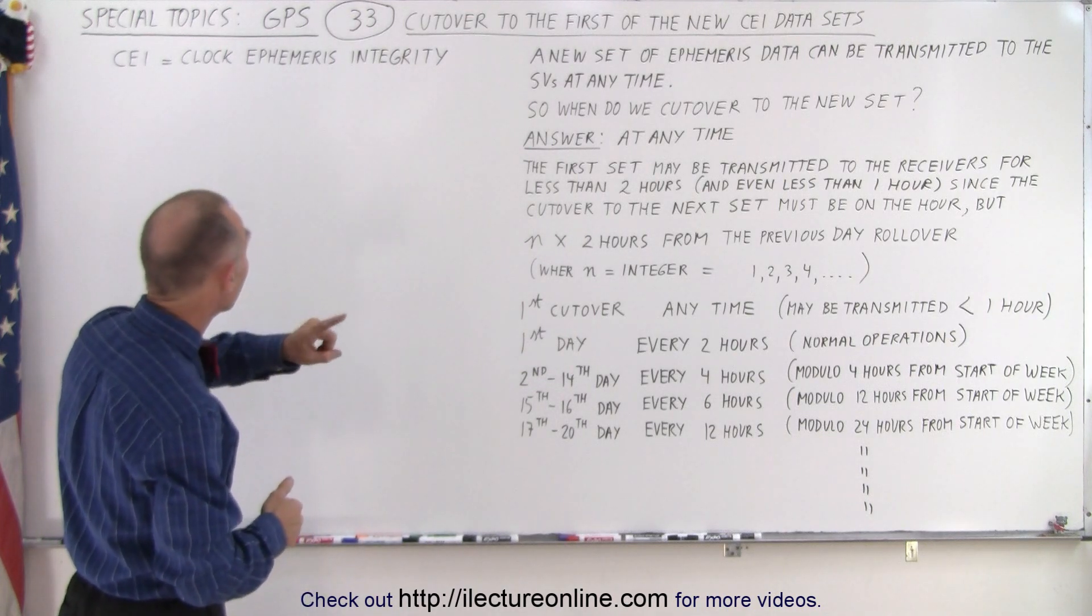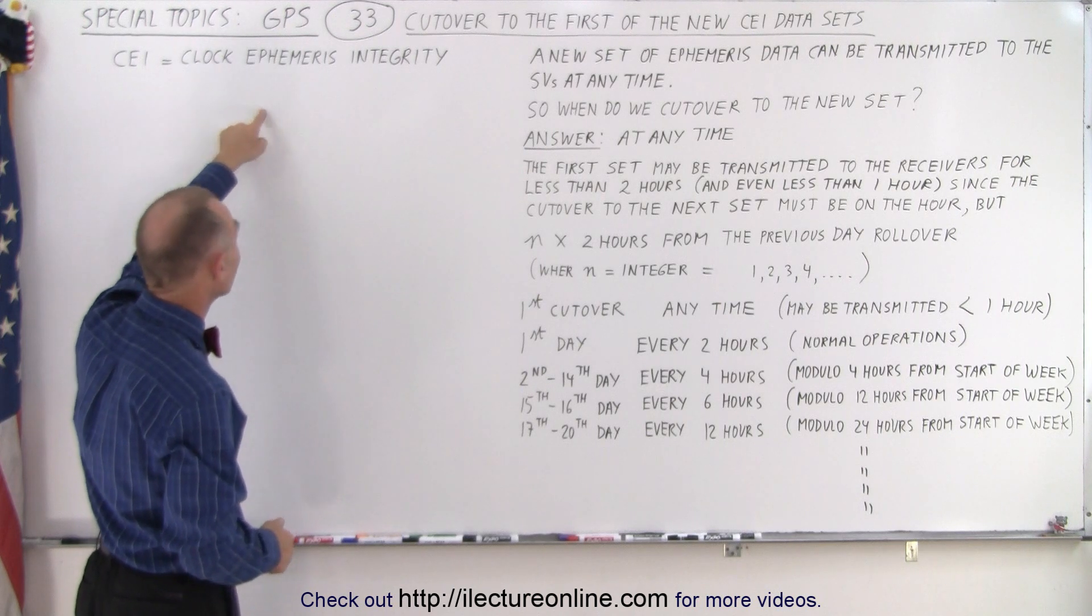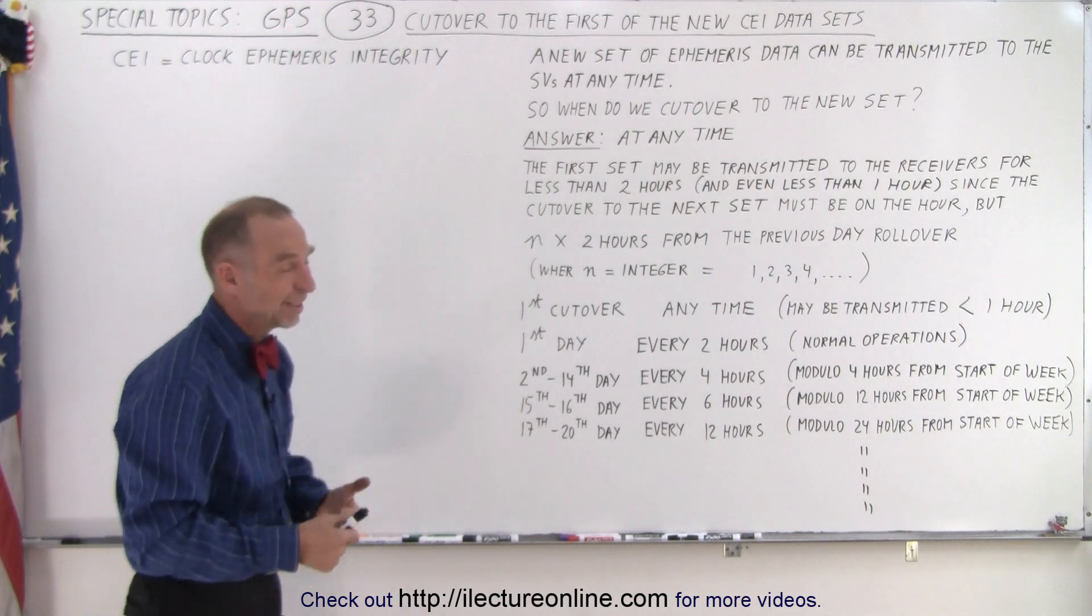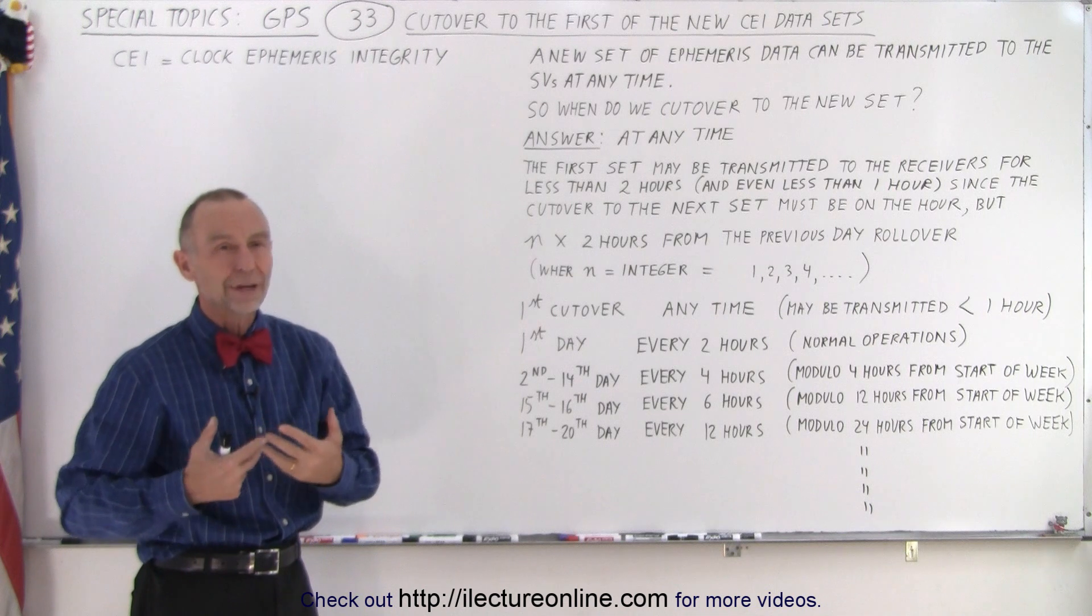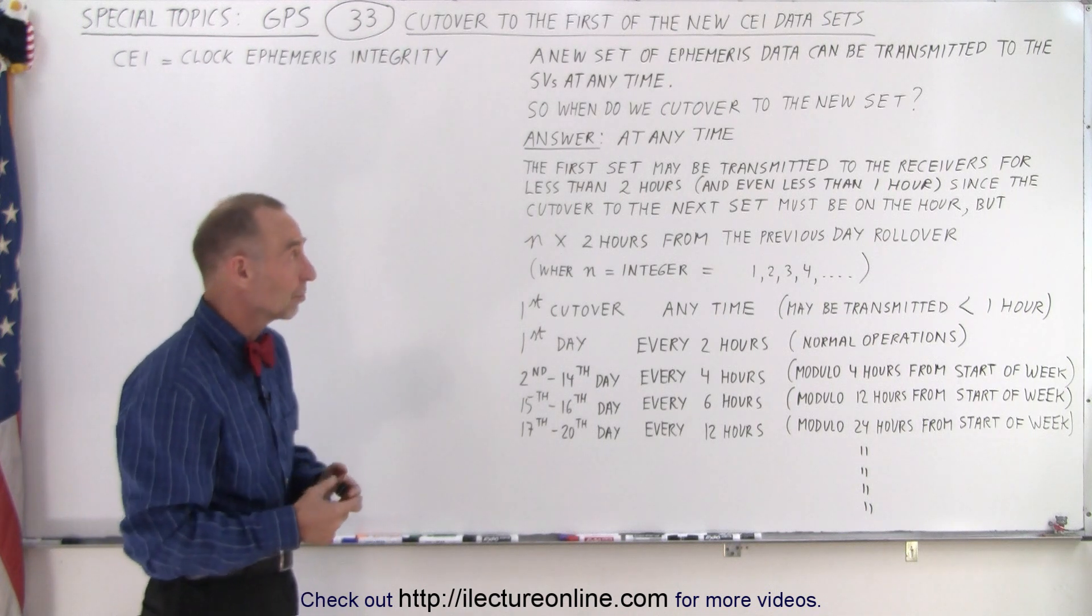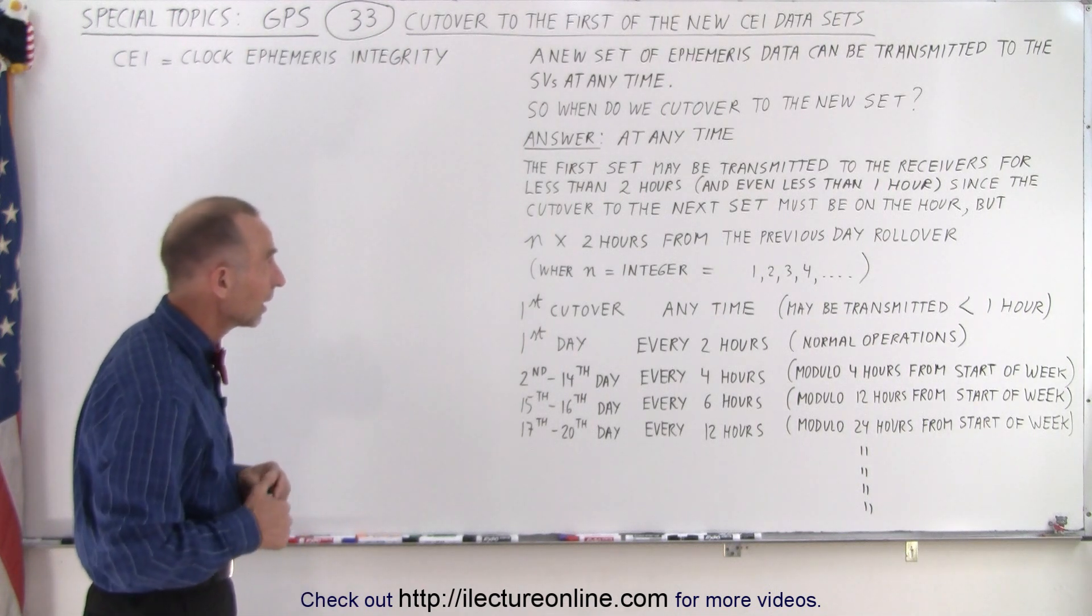Now notice the CEI. CEI means the Clock Ephemeris Integrity, so obviously the newer the data set, the more integrity that information has. That's why you want to use the newest data possible.